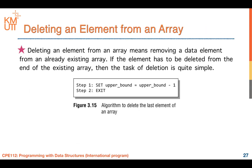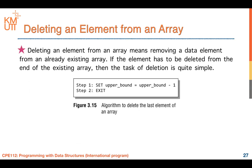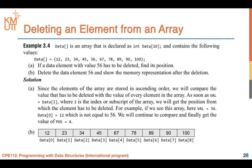Now, what happens when you want to delete an element from an array? The easiest case is removing the last element — simply set the upper bound to upper bound minus one and exit. But what if you want to delete an element inside the array that is not the last one? How can we do that?